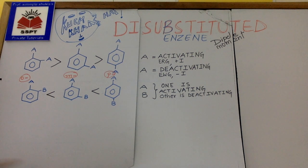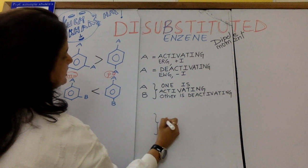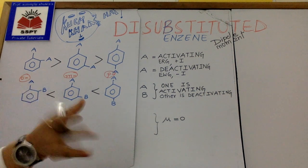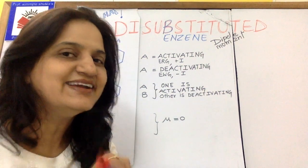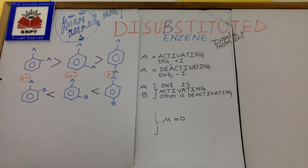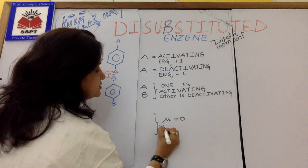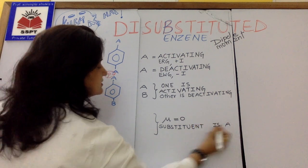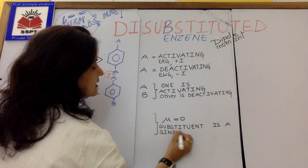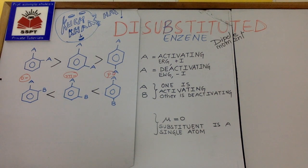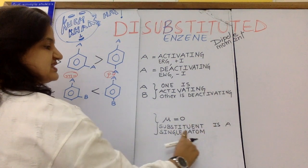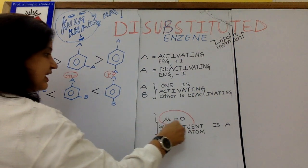Now what do you need to know? In which conditions do we consider dipole moment zero? This is only relevant for disubstituted benzenes. The first condition: when the substituent is a single atom — like chlorine or bromine — and we are discussing a para isomer, the dipole moment is zero. This is valid and applicable.